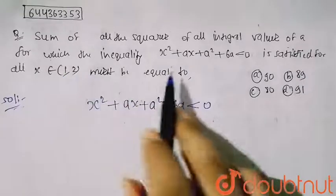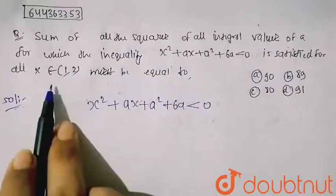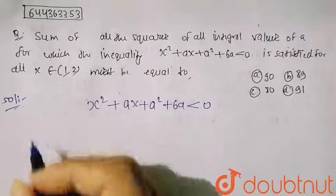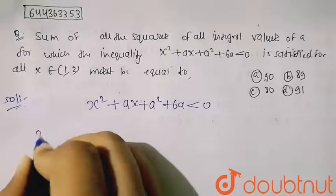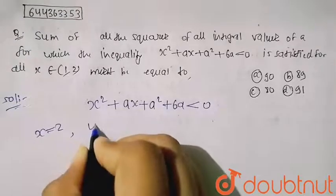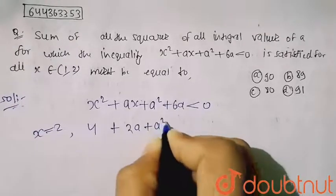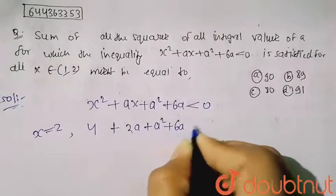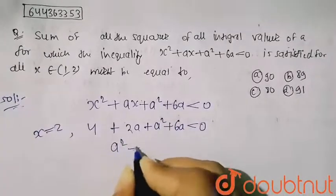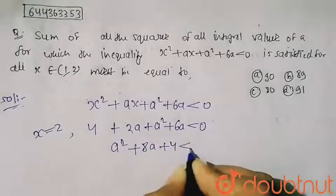Now, for which the inequality is satisfied for this interval — they are saying it is satisfying in this interval. So here I will check for this point. When I put x = 2, this will be 4 + 2a + a² + 6a < 0. It means a² + 8a + 4 < 0.